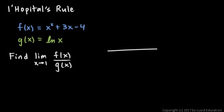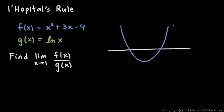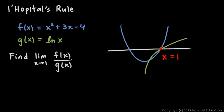Let's think about the graphs. Function f is a quadratic — a parabola that opens upward — and function g is the natural log function. It just so happens that both of these functions cross the x-axis right there at x = 1. Both functions have a y-value of 0 at that point, and that's what makes this an indeterminate form. If we try to calculate this, we're calculating 0 over 0.